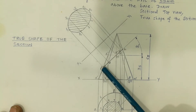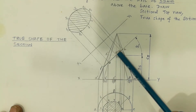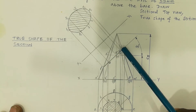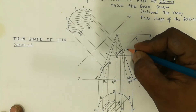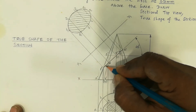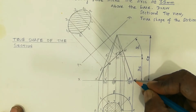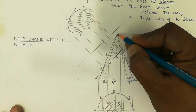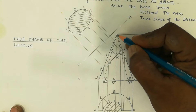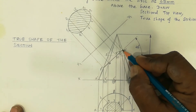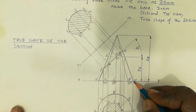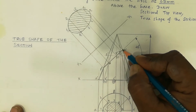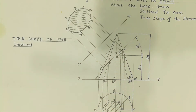This is called the front view after passing the cutting plane. 1-5-1 is the cutting plane line. This portion is the needed portion. Removing the apex — this apex portion is removed and the retained solid is called truncated. If you cut an object, it becomes a truncated solid.